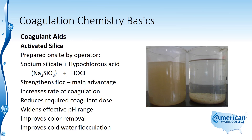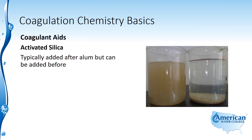If color is an issue, activated silica is effective at removing color. In addition, it improves cold water flocculation, which doesn't occur very well in cold water for a couple of reasons: chemical reactions occur more slowly, and the water is more dense. So when water temperatures drop, activated silica can improve the flocculation process. When using it with alum, it is typically added after the alum.